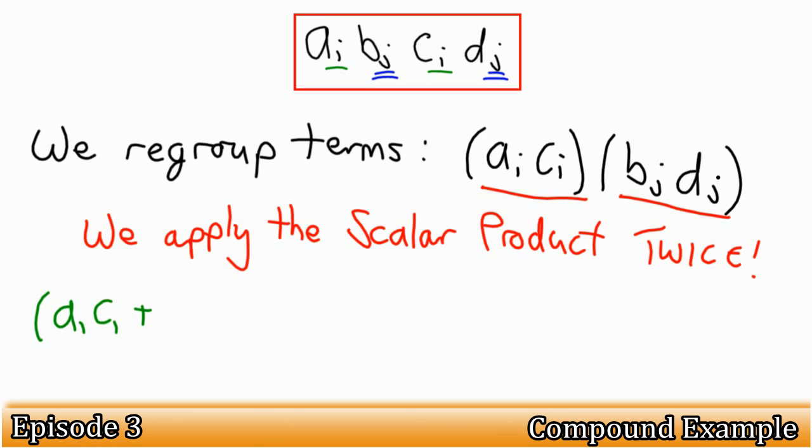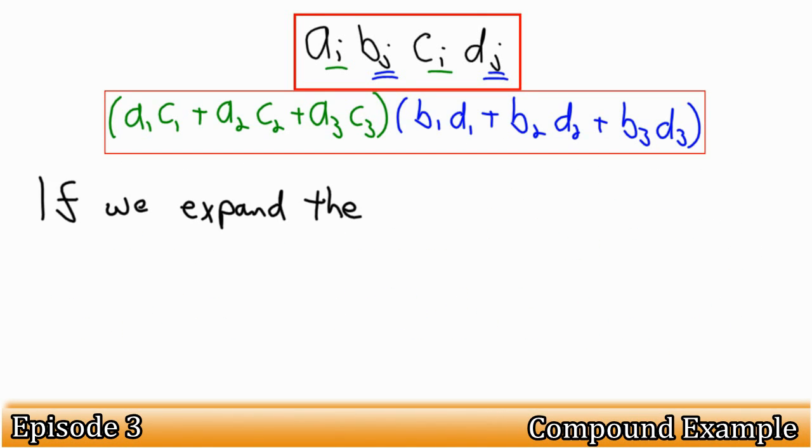A1 C1 plus A2 C2 plus A3 C3, and so on. And if we expand out the brackets, you can see that we have nine terms to the scalar.